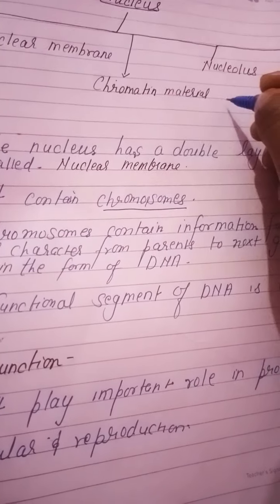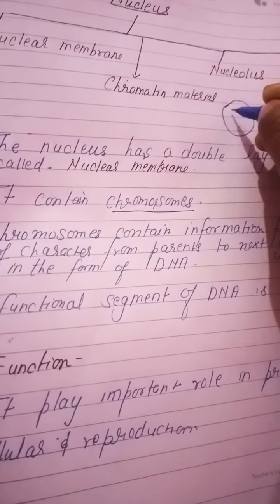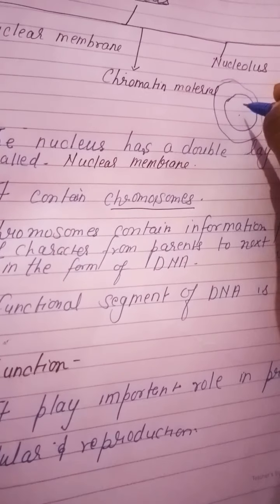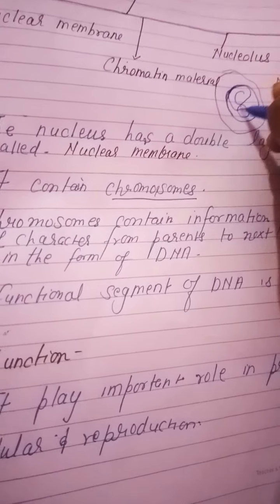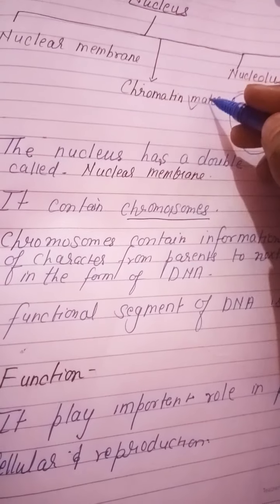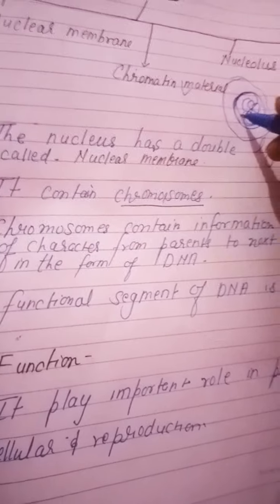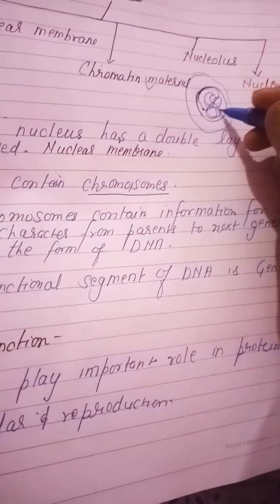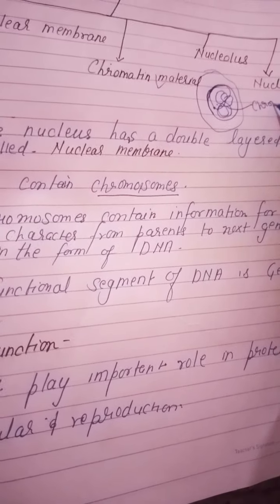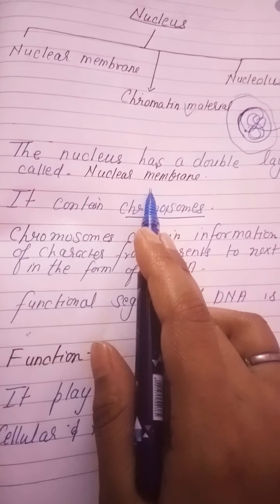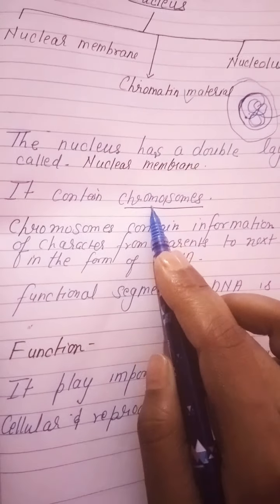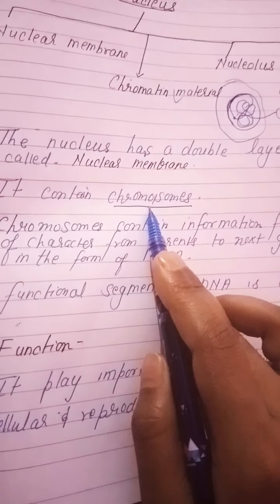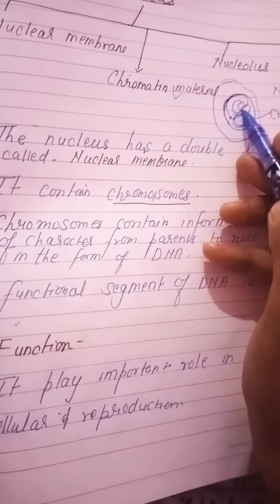The nuclear membrane surrounds the nucleus. Inside we have the chromatin material, which is a thread-like structure. This is the chromatin material — a thread-like structure. It contains chromosomes. The chromosomes carry the characters of your parents.